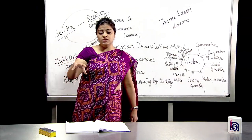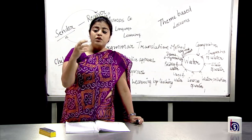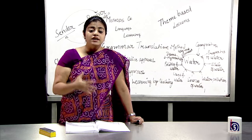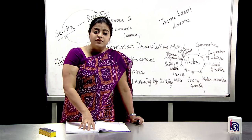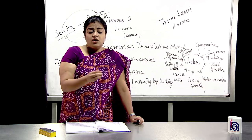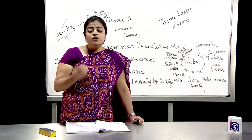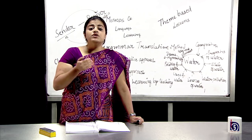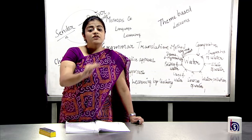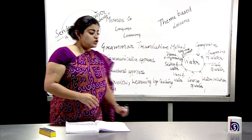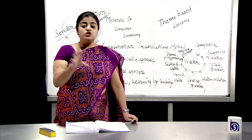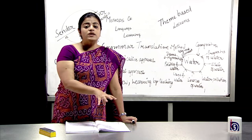Another practice is surveys, where children go out of the classroom and interact with people for a particular purpose. For example, if I want to open a restaurant but don't know what kind would be profitable, I can survey people of different age groups, genders, and social classes to find out what cuisine they prefer and what cost they are ready to pay for dinner or lunch. This gives students practice interacting in real-life situations with real people.